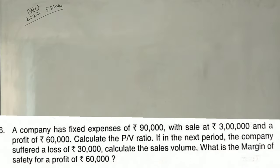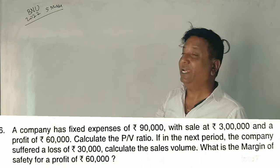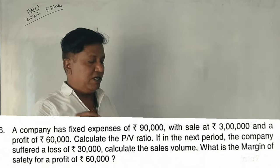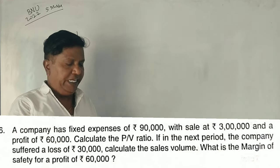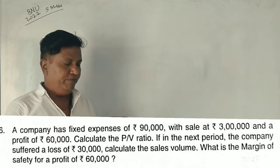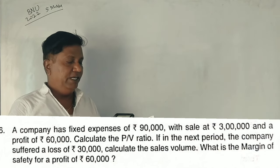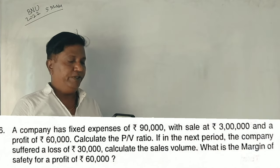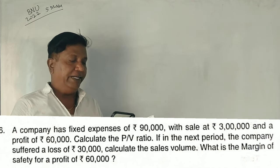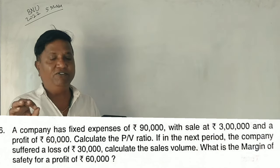Hello guys. This is North University 1st Semester MBA Accounting for Managers, 2022 Question Paper. It's a 5-mark marginal costing problem. A company has fixed expenses of 90,000 with sales of 3 lakh rupees and a profit of 60,000. Calculate the PV ratio. If in the next period the company suffered a loss of 30,000, calculate the sales. What is the margin of safety for a profit of 60,000?